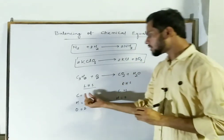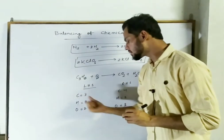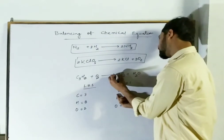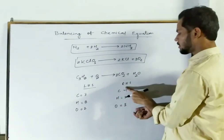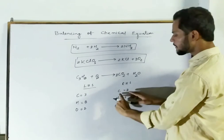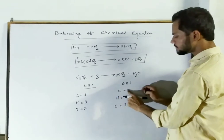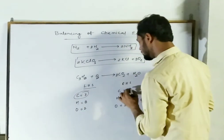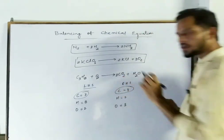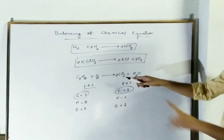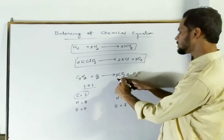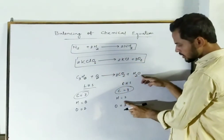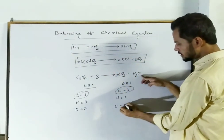We have 3 carbon in LHS and 1 carbon in RHS, so the CO₂ should be multiplied by 3. The number of carbon will become 3, so now carbon is balanced. The number of oxygen on the RHS will become 3 × 2 = 6 from CO₂, plus 1 from H₂O, giving 7 oxygen on RHS so far.